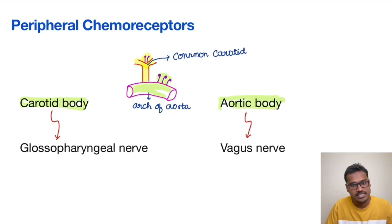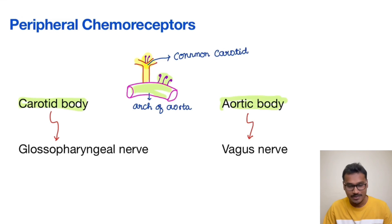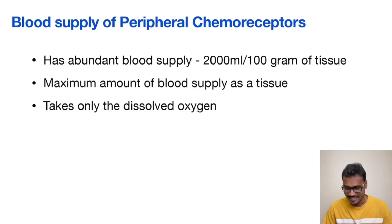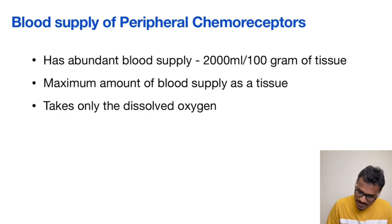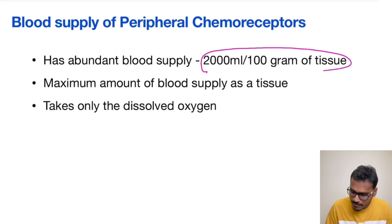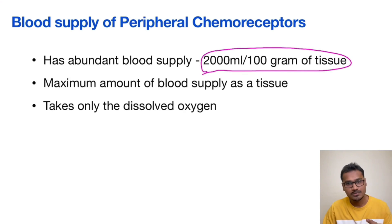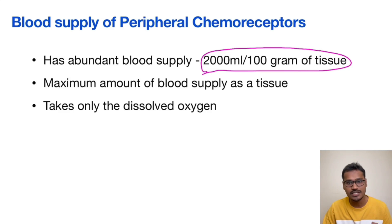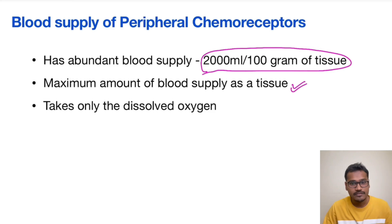The final destination is the same — they will go near the chemoreceptor regions in the central system and influence the medullary neurons. There is an interesting thing about the blood supply of peripheral chemoreceptors: they have a tremendous amount of blood supply — around 2000 ml per 100 grams of tissue. This is tremendously huge and represents the maximum blood supply for any specific tissue.